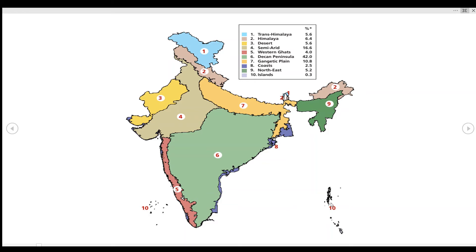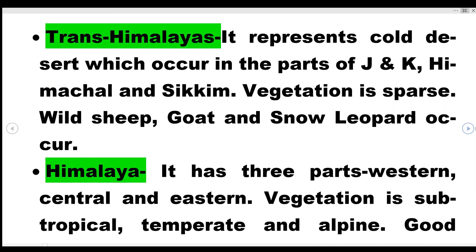Trans-Himalayas represents cold deserts which occur in the parts of Jammu and Kashmir, Himachal Pradesh, and Sikkim. Vegetation is very low in this region. Wild sheep, goat, and snow leopard occur here.